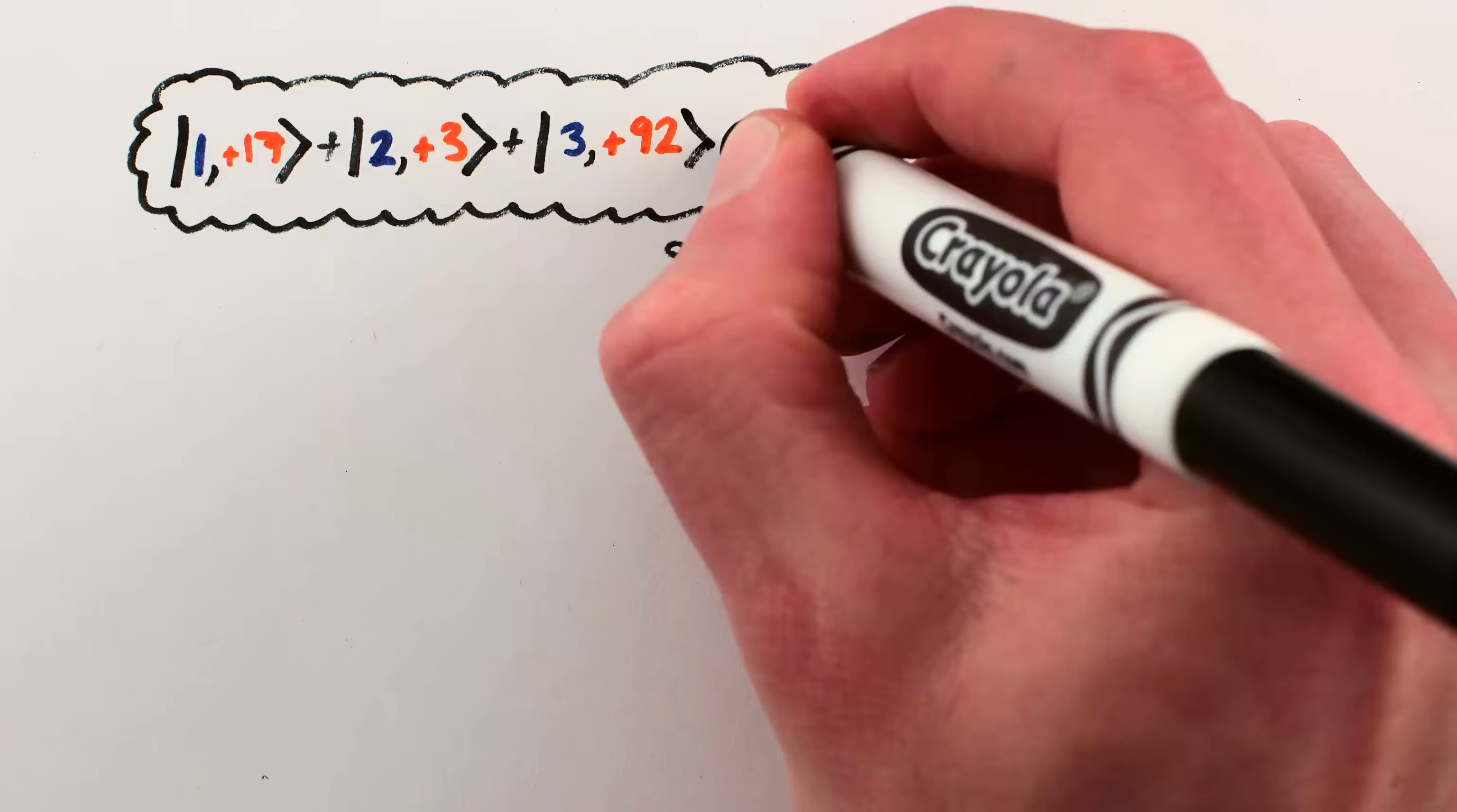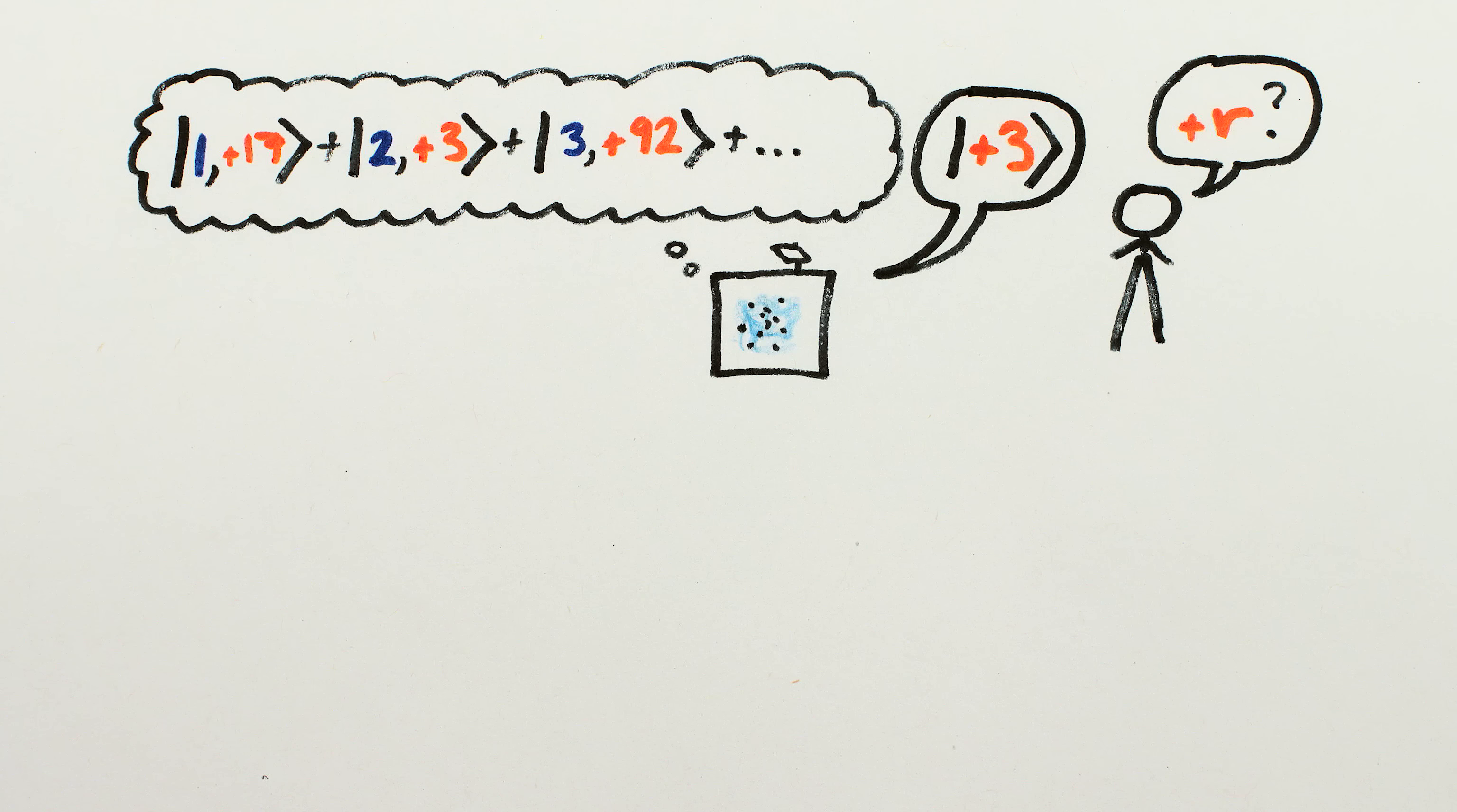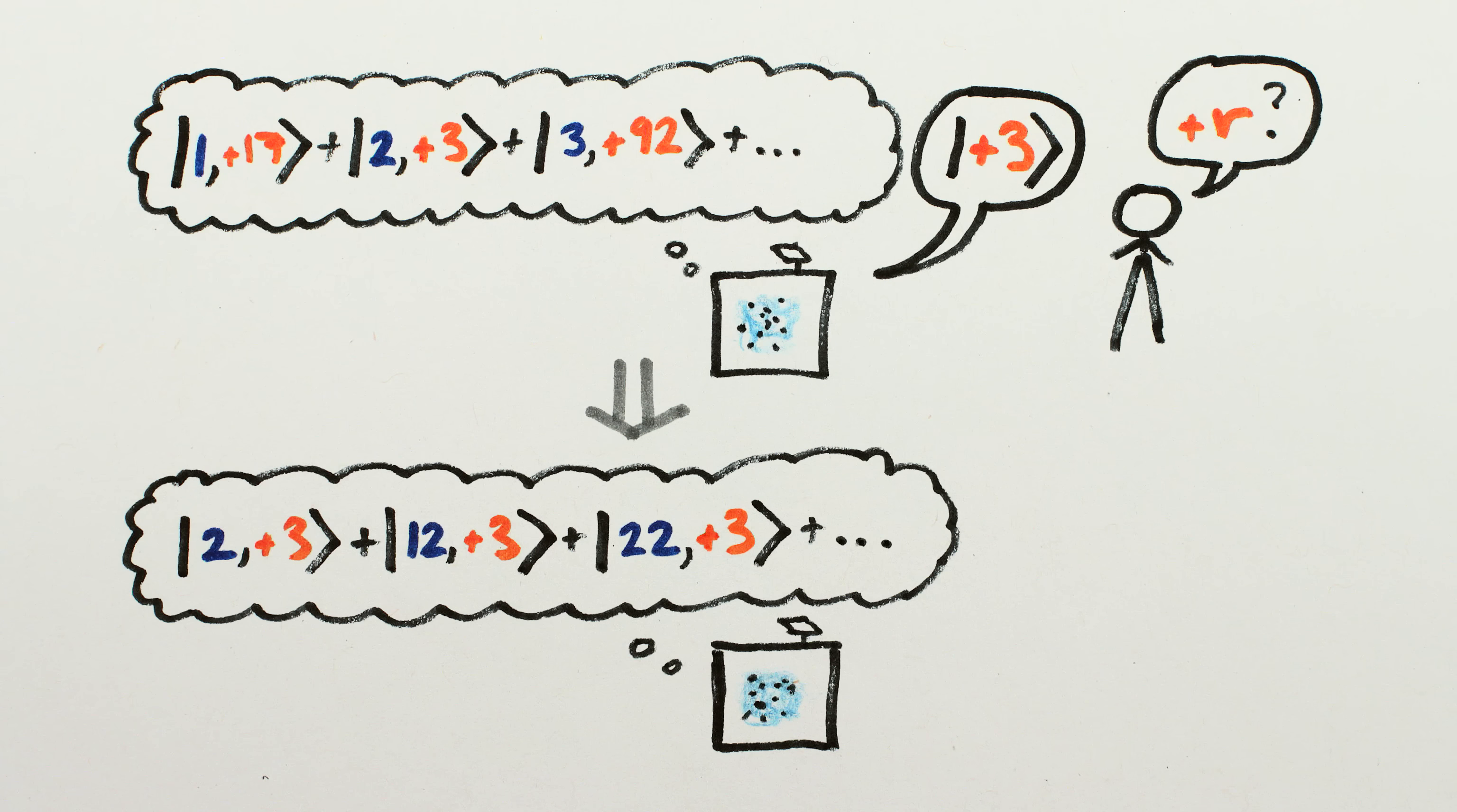Specifically, if we take the superposition of all possible powers and just measure the amount more than a multiple of n part, then we'll randomly get one of the possible amounts more than a multiple of n as the output, say 3. The specific number doesn't matter to us, but what does matter is that this means we must be left with a superposition of purely the powers that could have resulted in a remainder of 3.